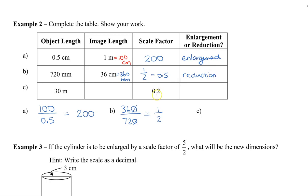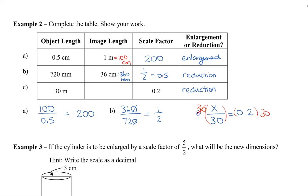In the final example we already have a scale factor of 0.2, so the image is smaller — this is going to be a reduction. Using our formula, the image length x divided by the object length 30 equals a scale factor of 0.2. Multiplying both sides by 30, we get x equals 0.2 times 30, which equals 6. Because 30 is in millimeters, 6 must also be in millimeters.